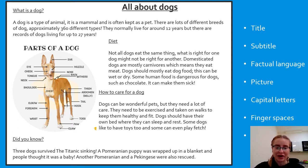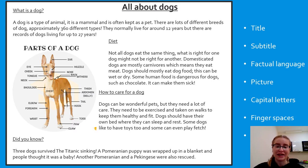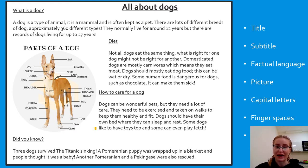The next subtitle is 'Diet': 'Not all dogs eat the same thing - what is right for one dog might not be right for another. Domesticated dogs' - that word means a dog that lives in a house - 'are mostly carnivores, which means they eat meat. Dogs should mostly eat dog food, which can be wet or dry, and some human food is really dangerous for dogs, such as chocolate, and can make them really sick.' The next subtitle is 'How to Care for a Dog': 'Dogs can be wonderful pets but they need a lot of care. They need to be exercised and taken on walks to keep them healthy and fit. Dogs should have their own bed, and some like to have toys and can even play fetch.'